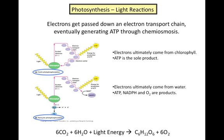In non-cyclic photophosphorylation, sunlight provides the energy to split water to ultimately provide electrons to the chain. Because water is split, oxygen is a byproduct of non-cyclic photophosphorylation, as well as NADPH, as the hydrogens from the water molecules reduce NADP+.